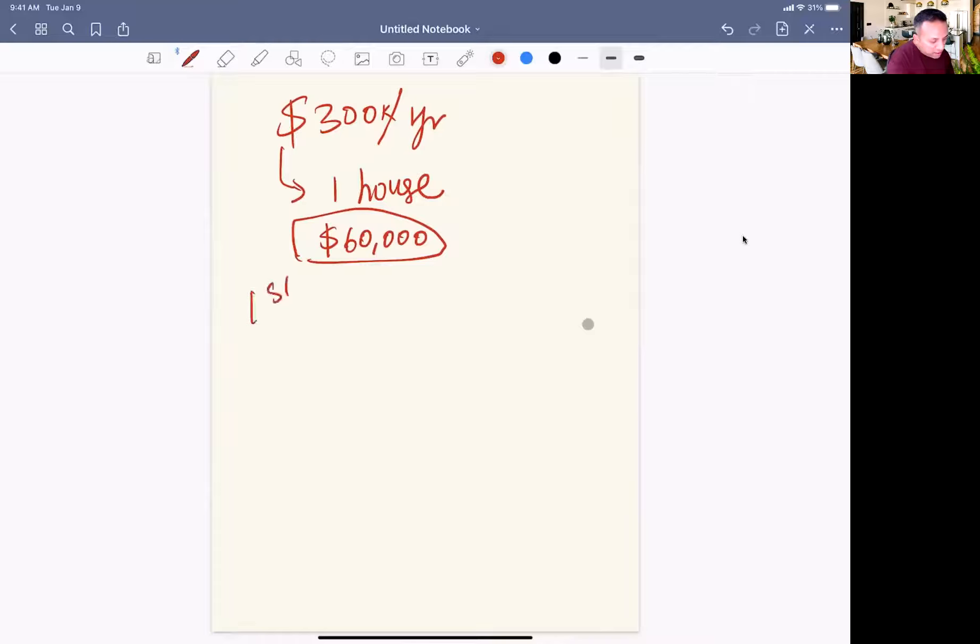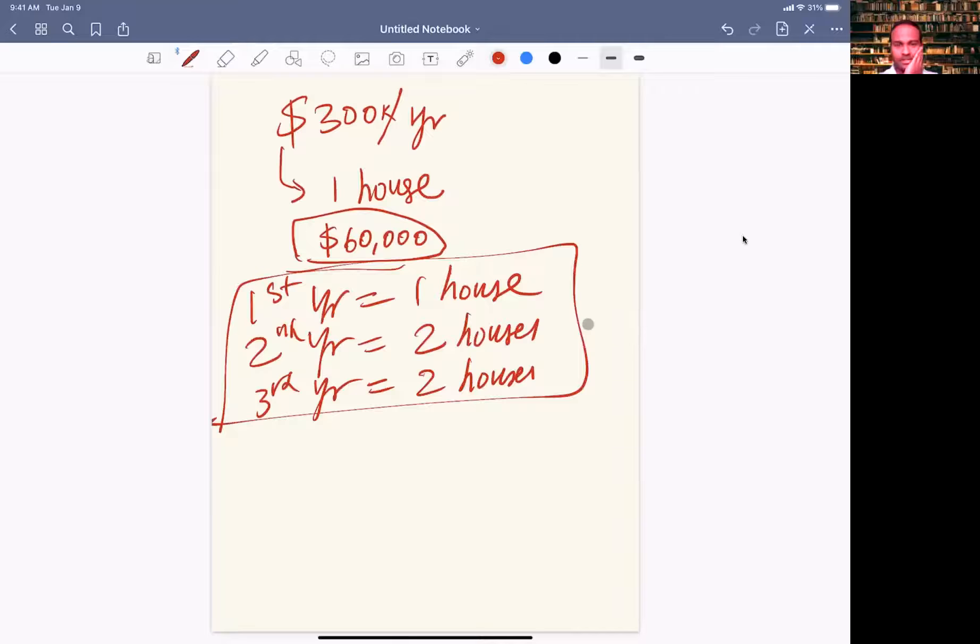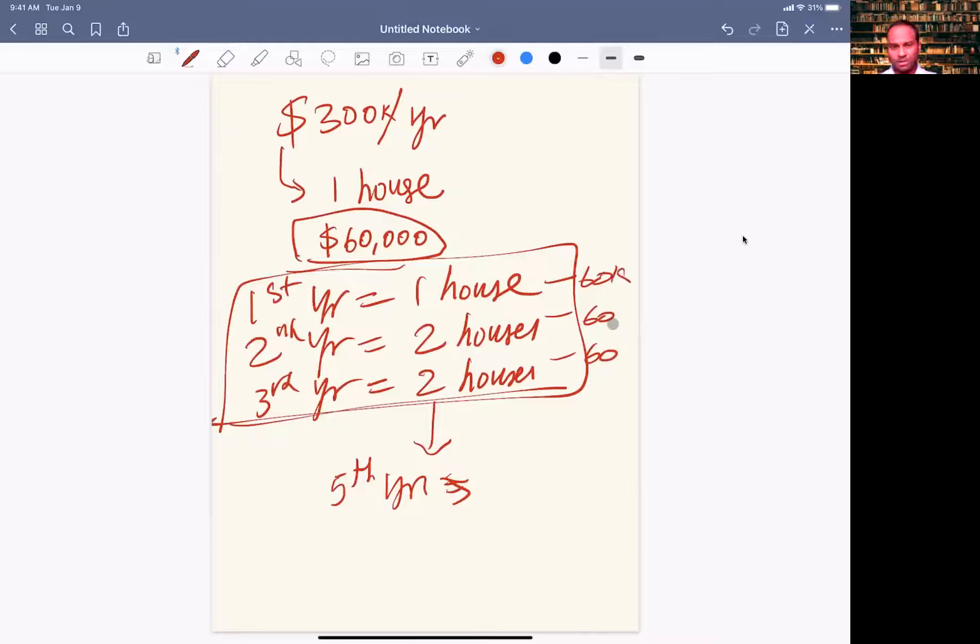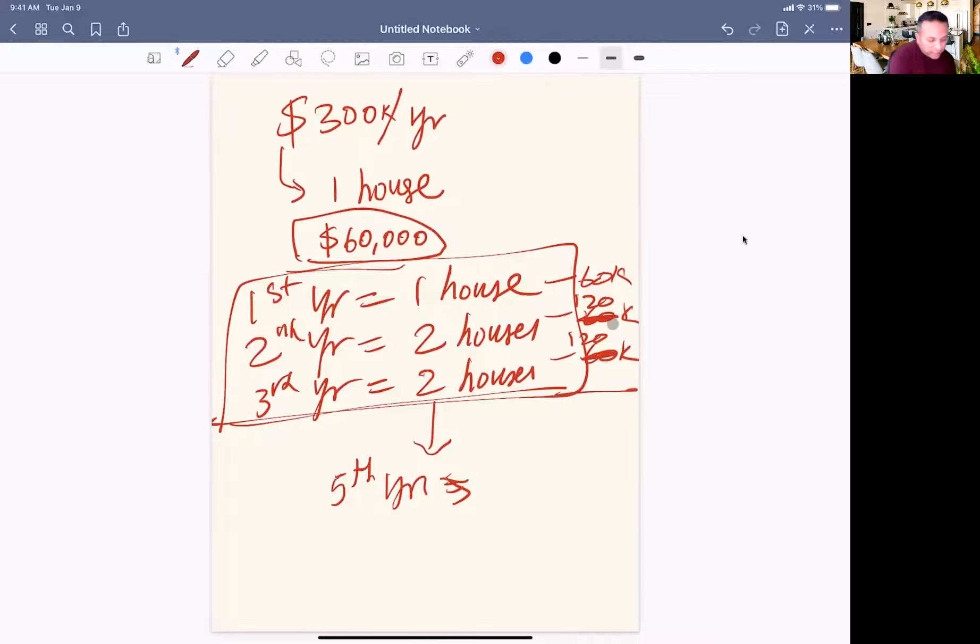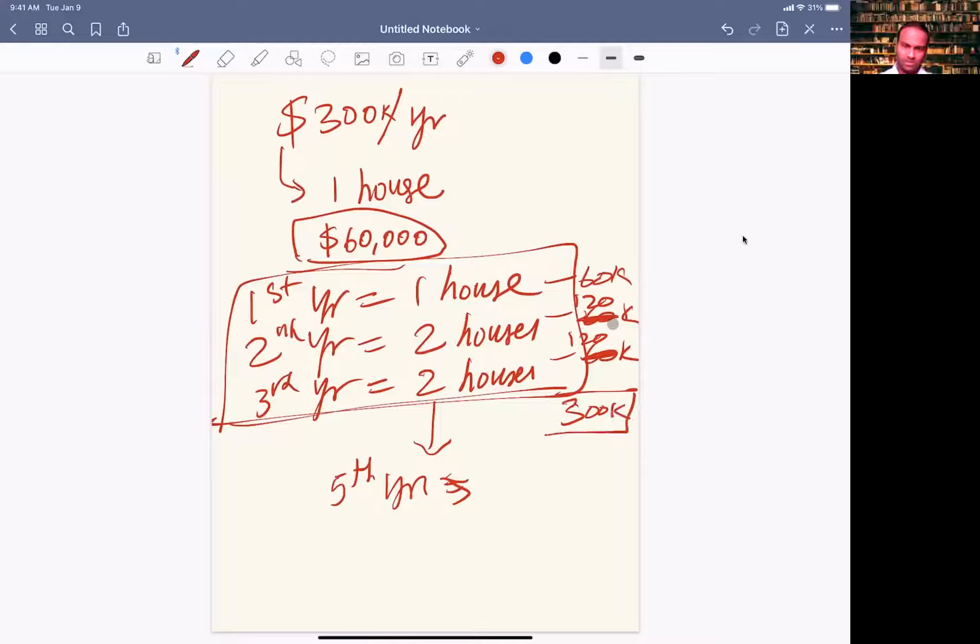First year you buy one house. Second year you buy two houses. Third year you buy two more houses. So you're going to buy five houses in three years. That is $60,000, $120,000, $120,000 - so you spent $300,000 in three years. But what are you going to do in the first year? You only bought one house.